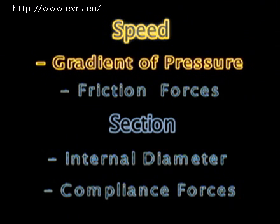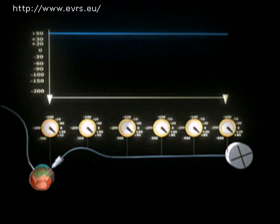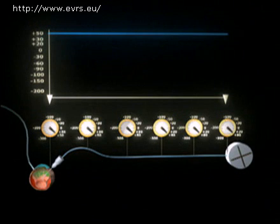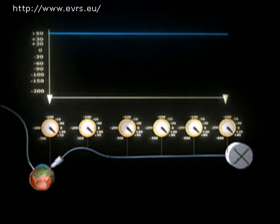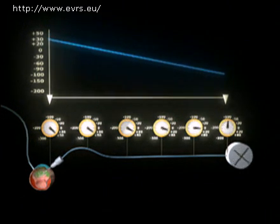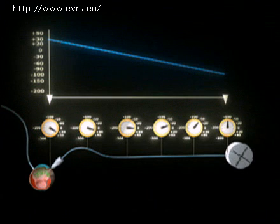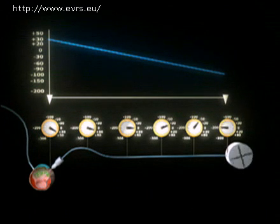First of all, we have the gradient of pressure. The pump generates the gradient of pressure. If the pump is not turning, the same pressure is throughout, and since there is no gradient of pressure, there is also no aspiration flow. The pump functions by creating a depression lower than the intraocular pressure, thus creating a gradient of pressure as well as the aspiration flow.